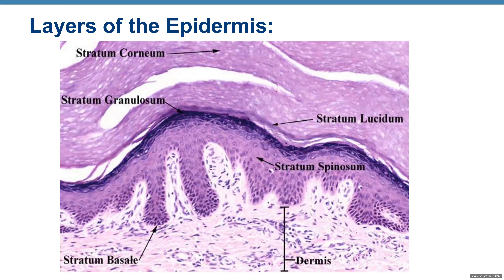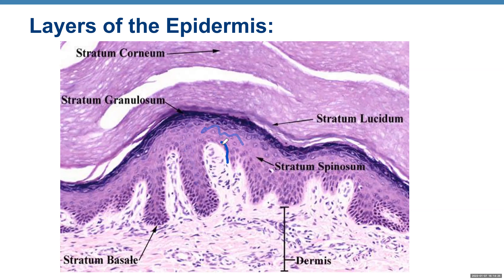This histology diagram shows corneum and lucidum, which means this is thick skin. Then granulosum, spinosum, and the deepest layer is stratum basale, with dermis underneath. Epidermis is made of epithelial tissue and dermis is made of connective tissue.